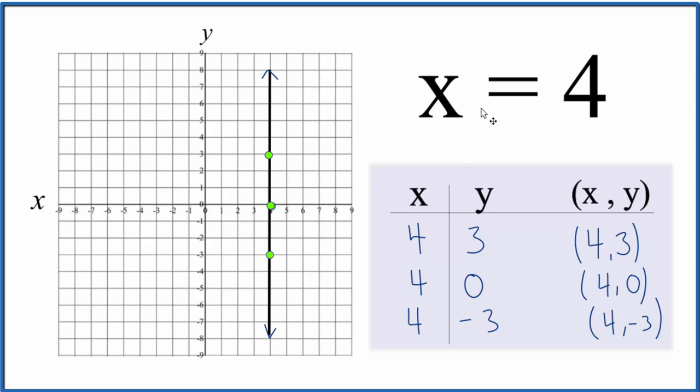This is the graph for the equation x equals 4. If you put other values in for y, they'd also be on the line. But x will always be 4 here because x equals 4. This is Dr. B with the graph for x equals 4. Thanks for watching.